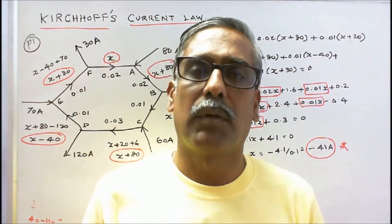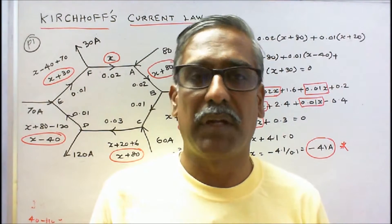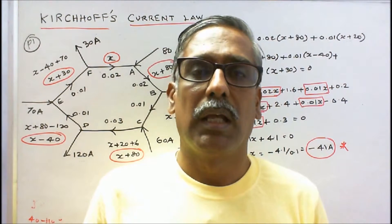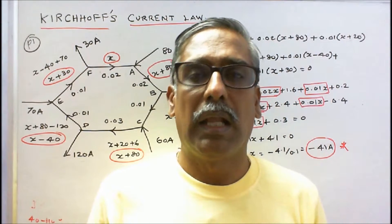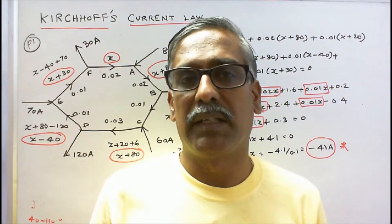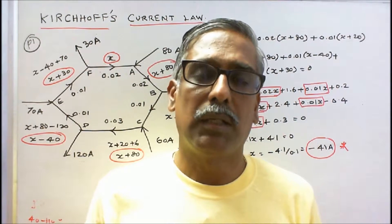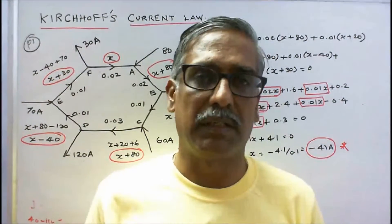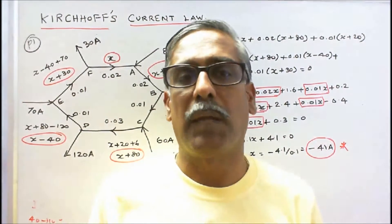In this class, we work out five problems on verification of Kirchhoff's Current Law. Kirchhoff's Current Law states that the algebraic sum of currents meeting at a junction is equal to zero, or current towards a junction is equal to current leaving the junction. Now we will work out five problems.